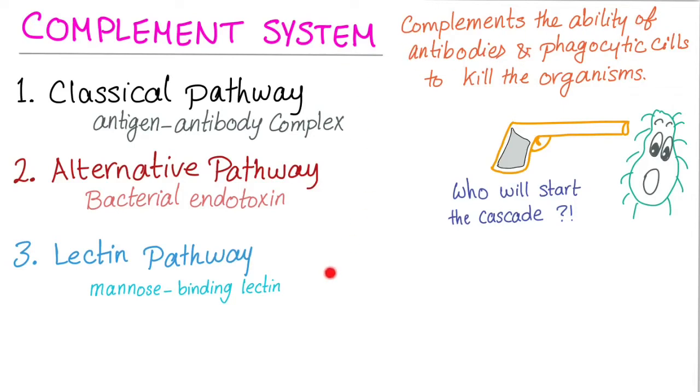Three different pathways depending on who pulls the trigger. Who will start the cascade? If it's antigen antibody complex, this is the classical pathway. If it's the bacterial endotoxin, this is the alternative pathway. If mannose binding lectin, this is the lectin pathway.